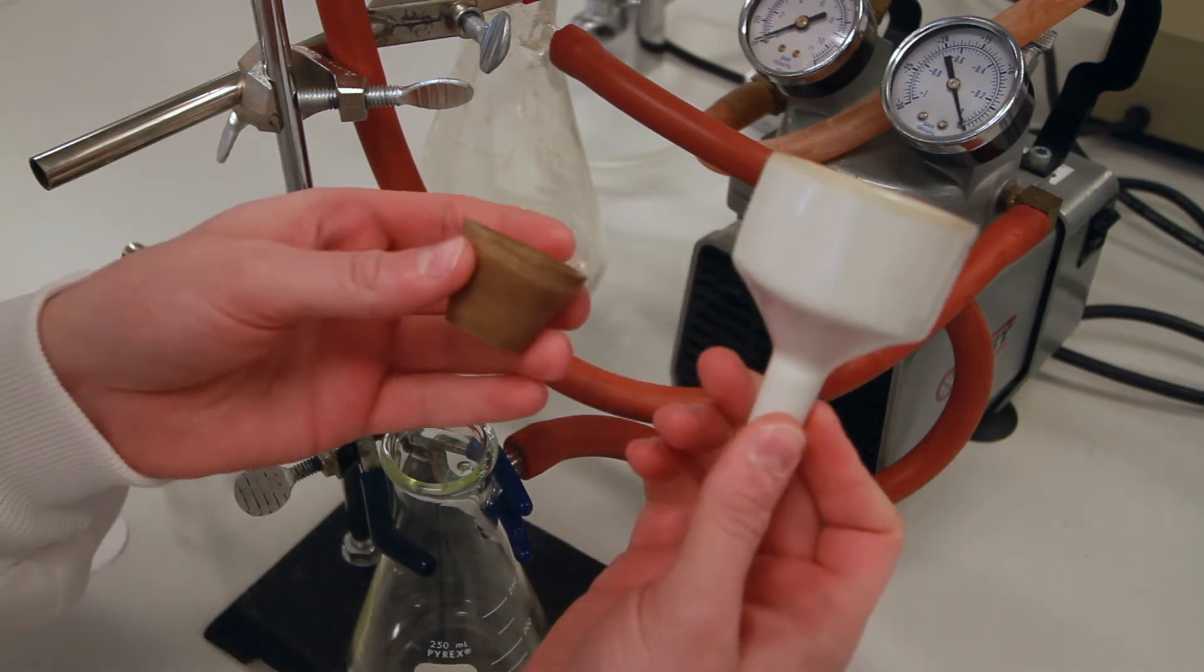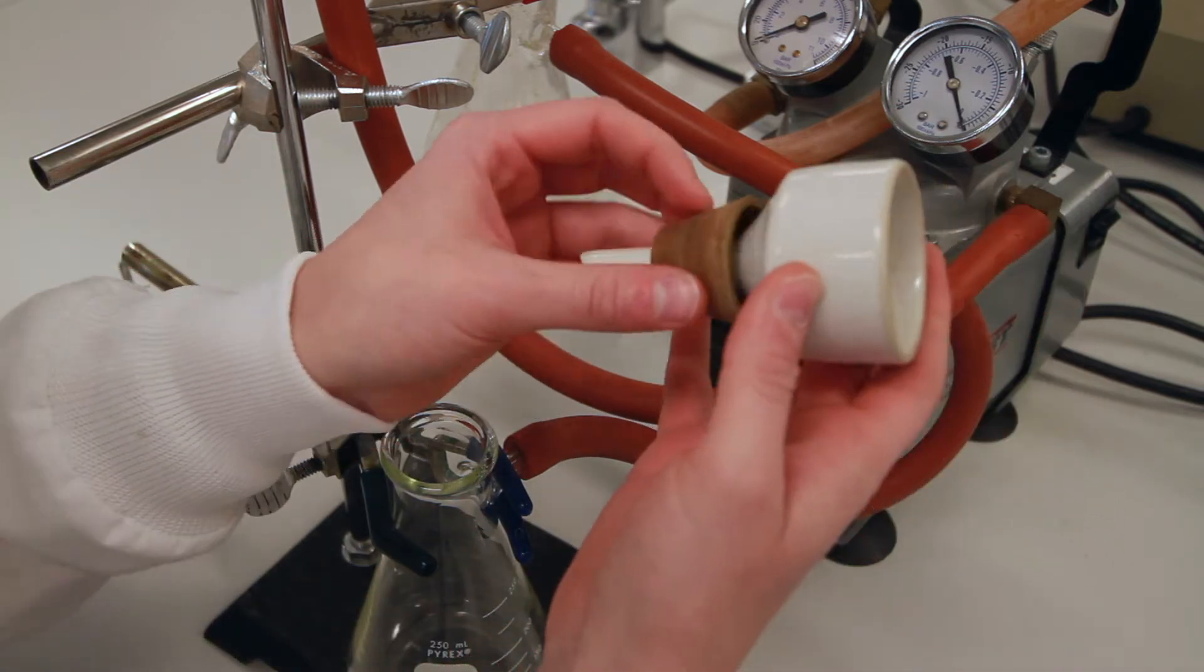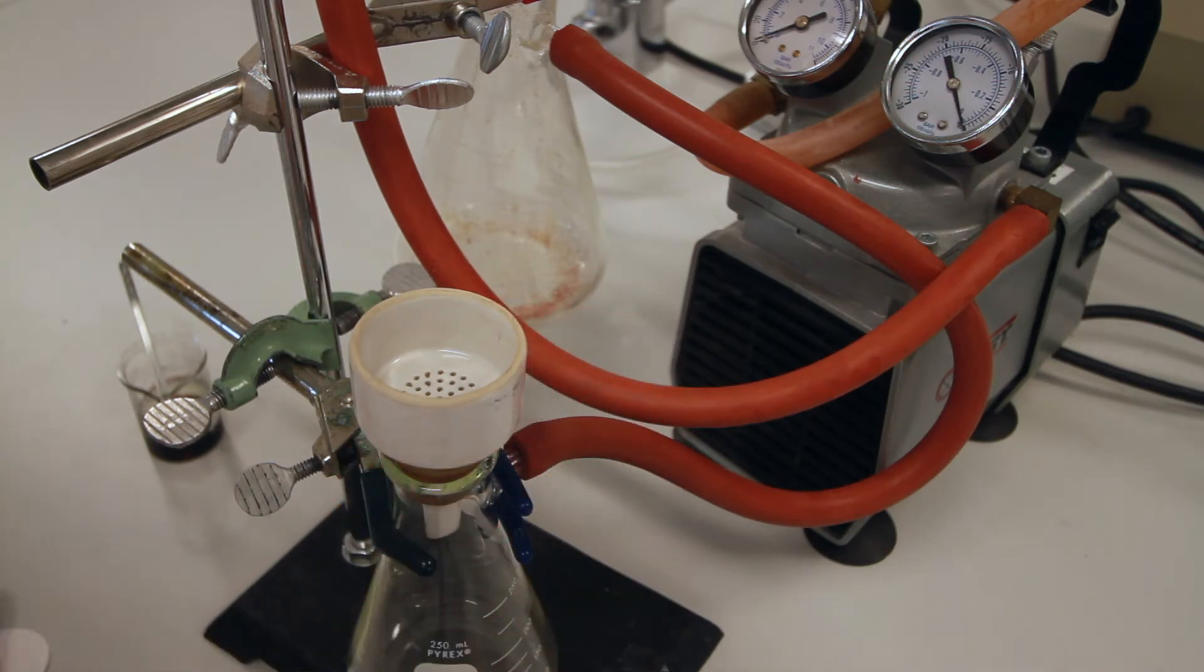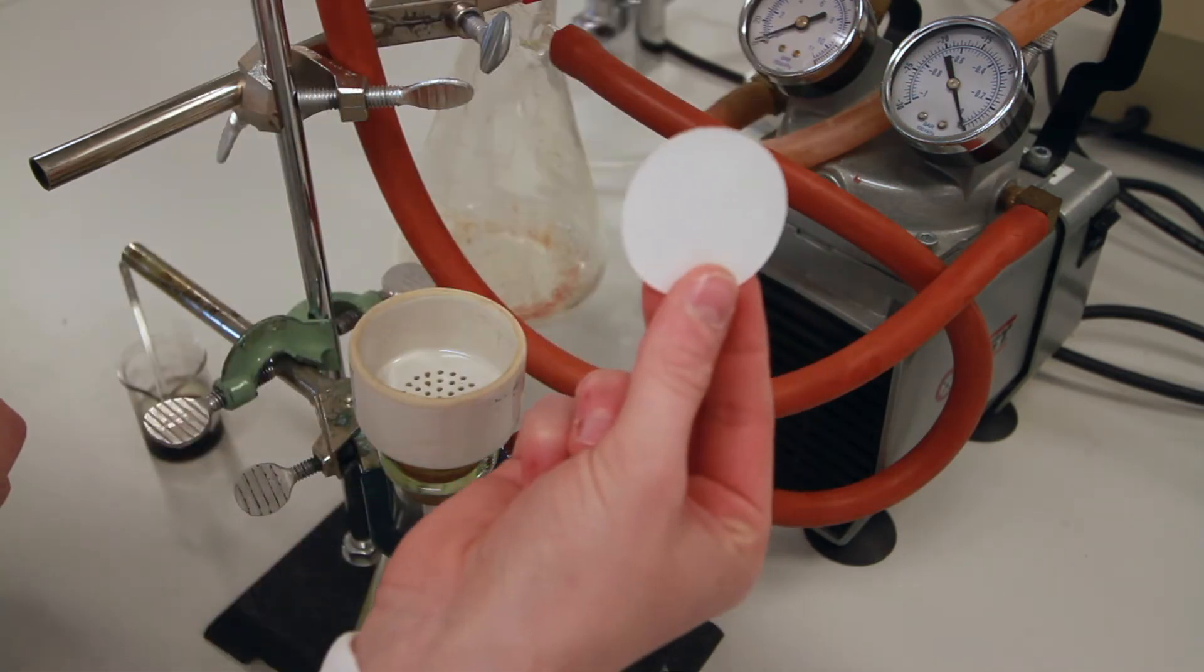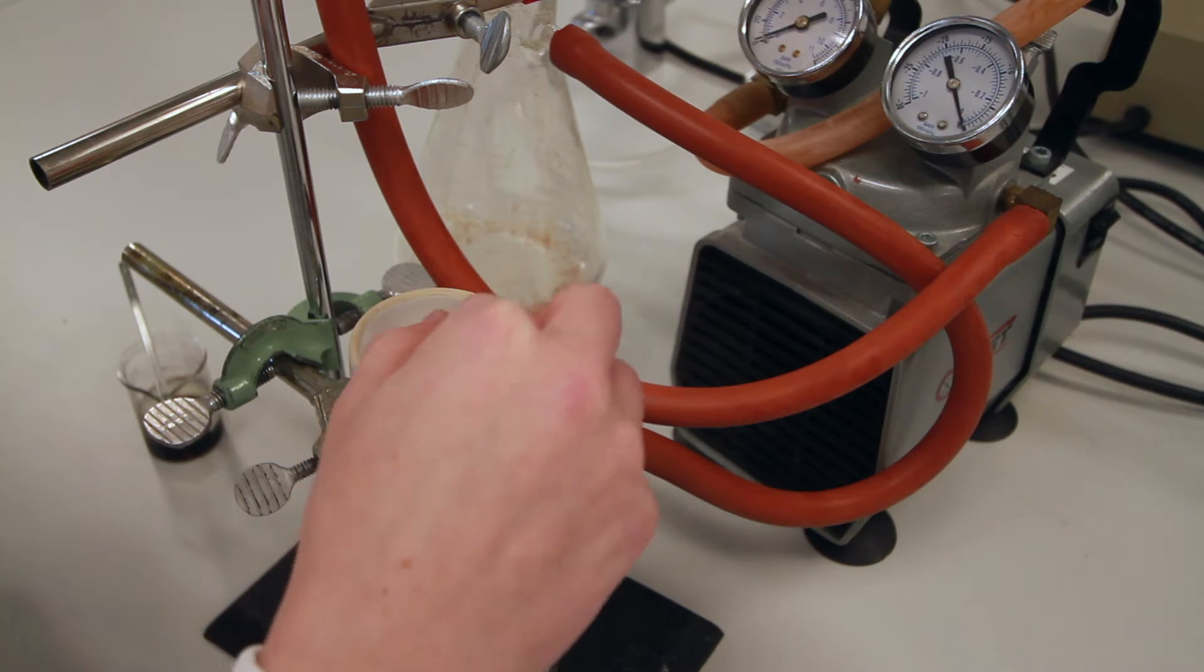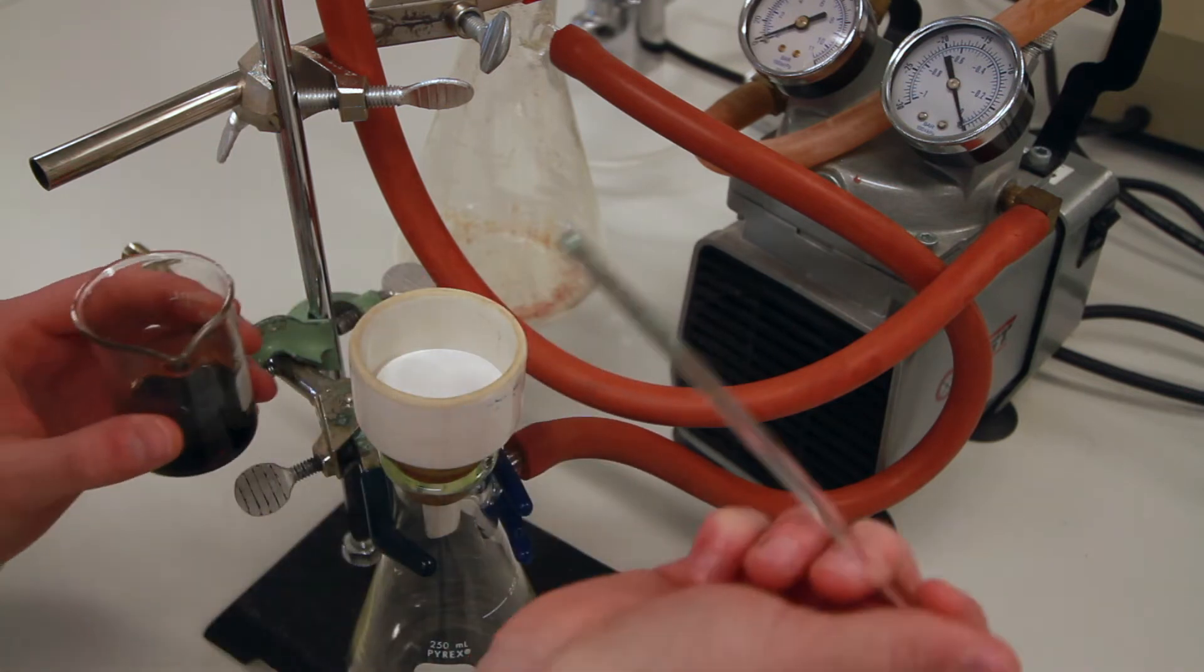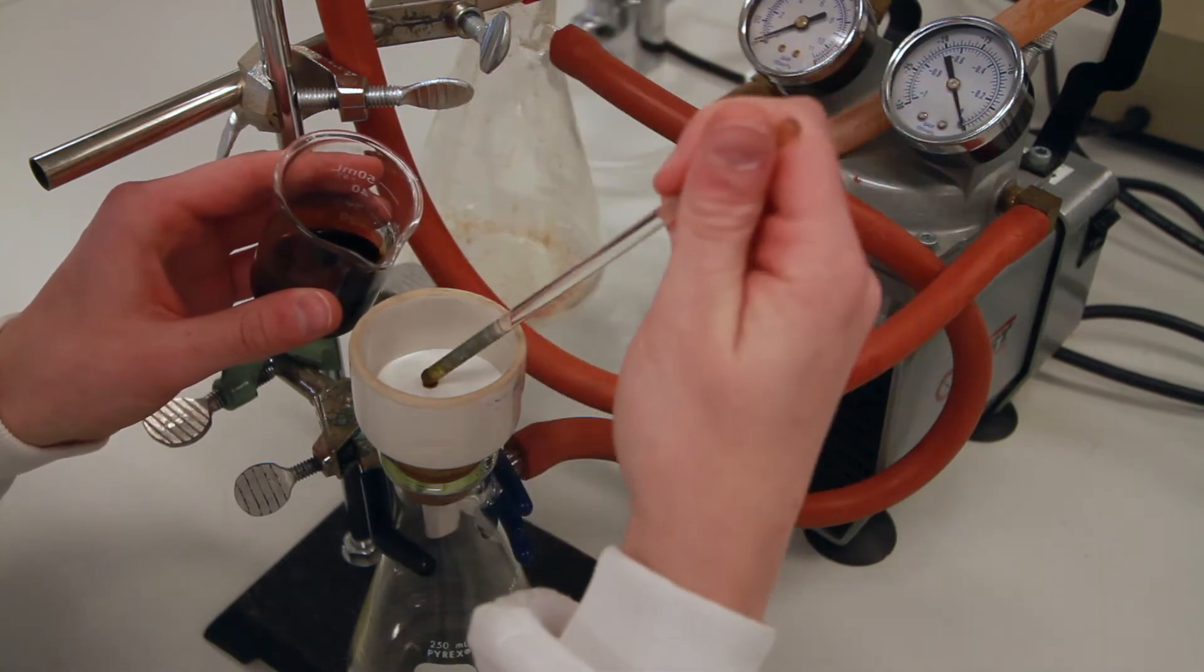Obtain your Buchner funnel and the rubber adapter and place it into the filter flask. Obtain a piece of filter paper and place it into the filter. Begin by wetting your filter paper with the solution you're about to filter.